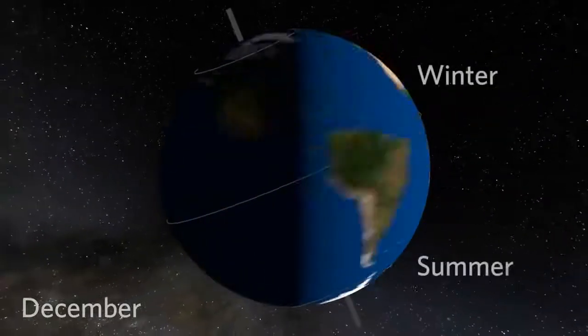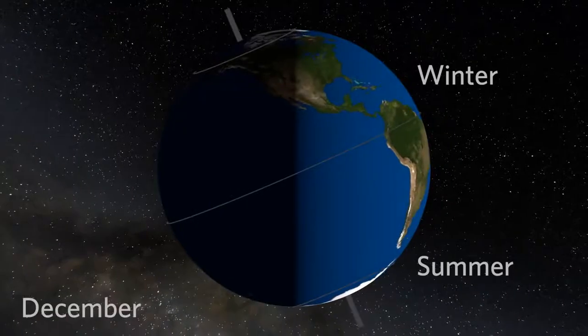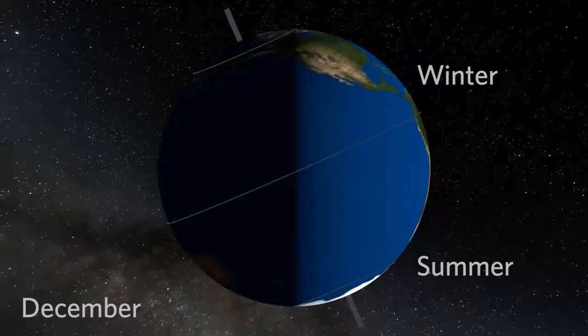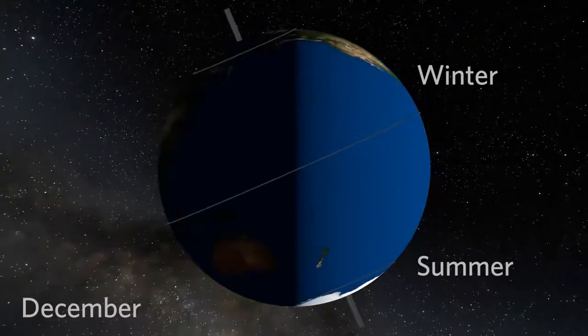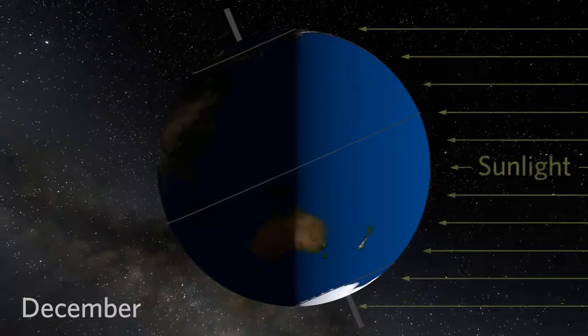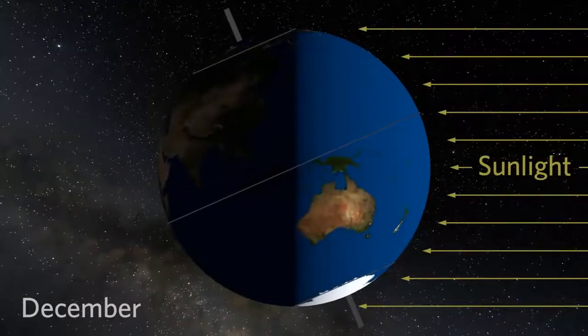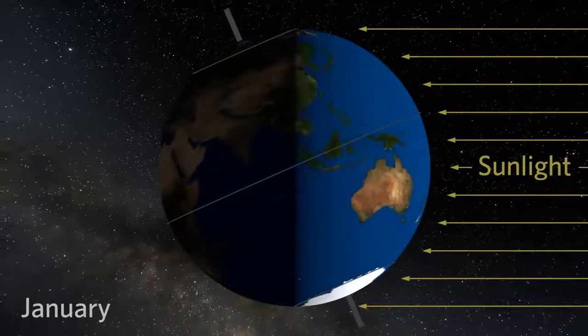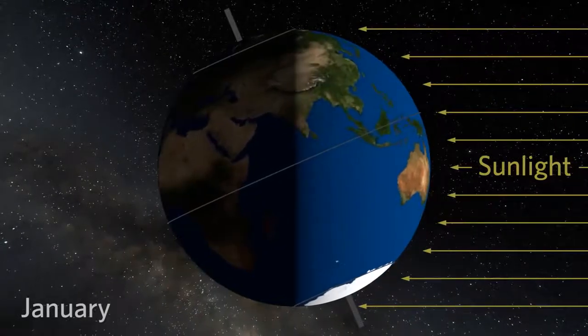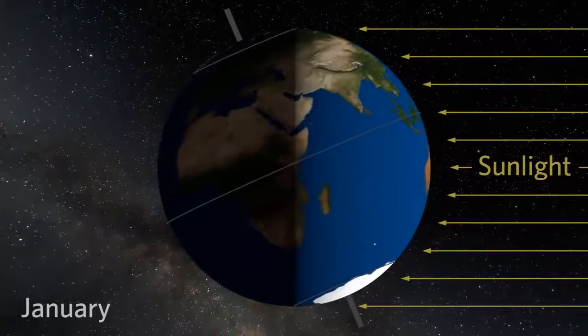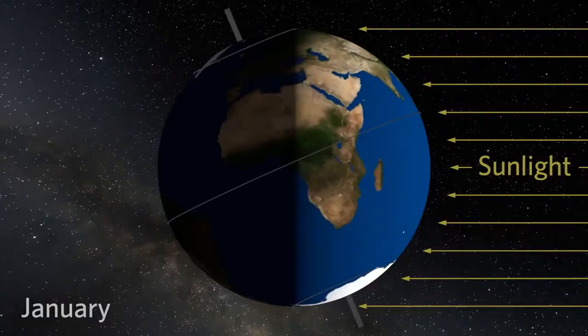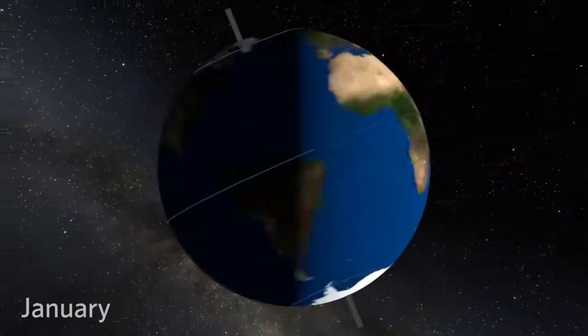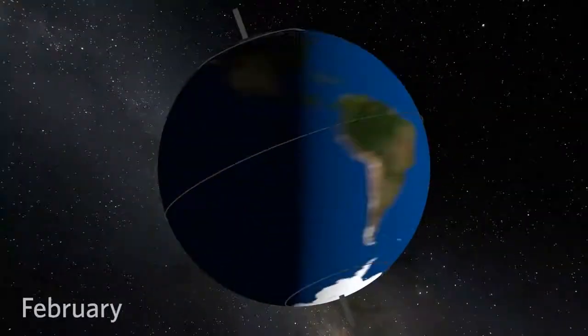Let's look at Earth when it's winter in the northern hemisphere. Observe how the North Pole tips away from the Sun. This means that sunlight strikes the northern hemisphere at a shallow angle for a short period of time. This is why winter weather is generally cool with short days and long nights.